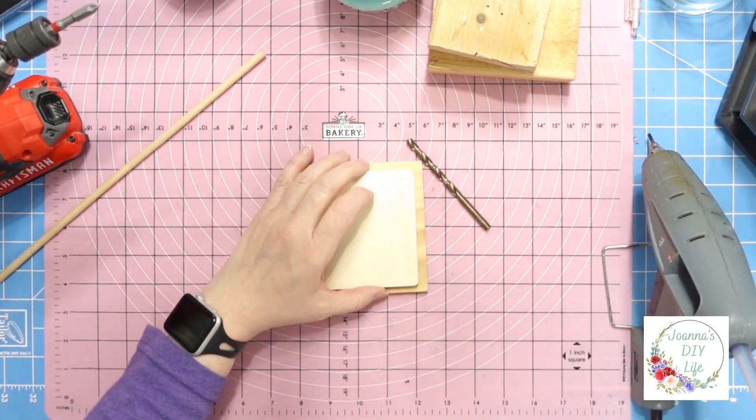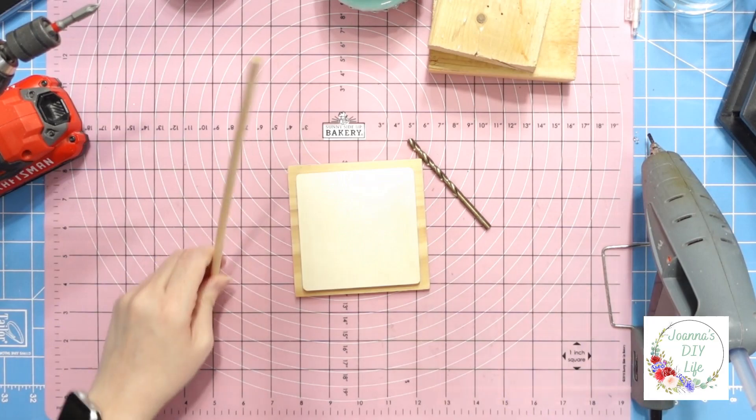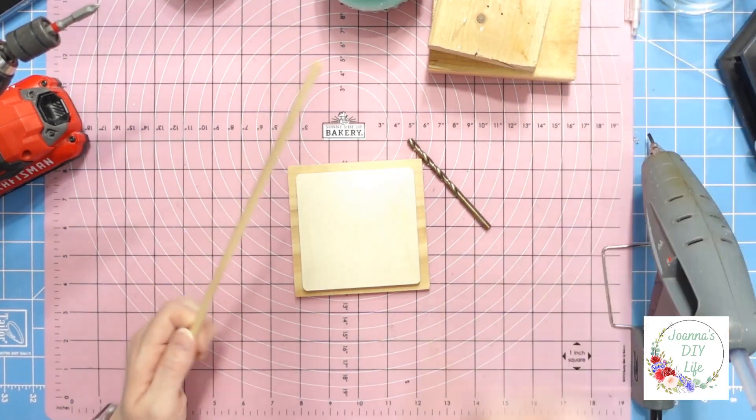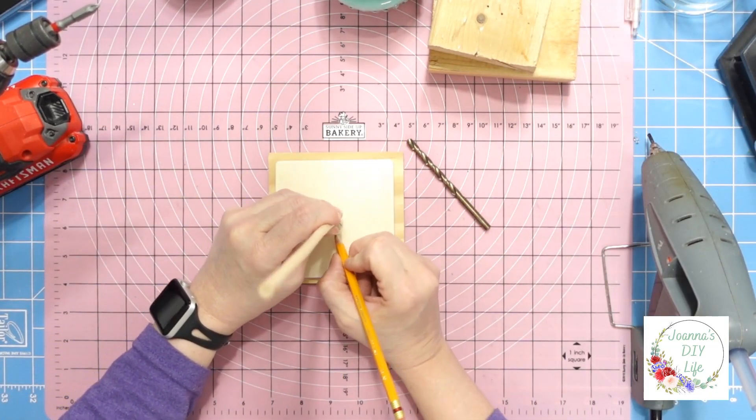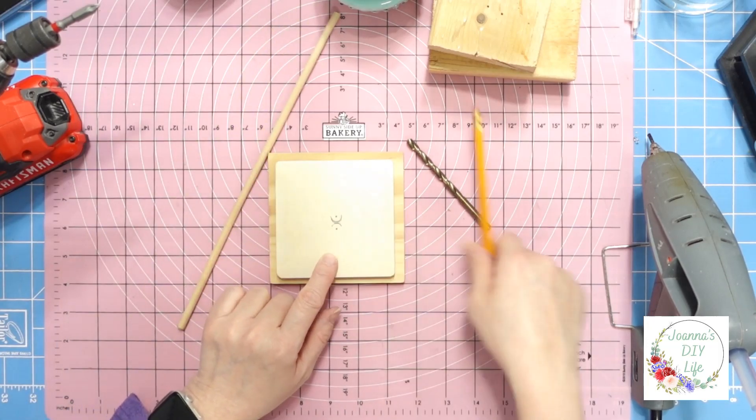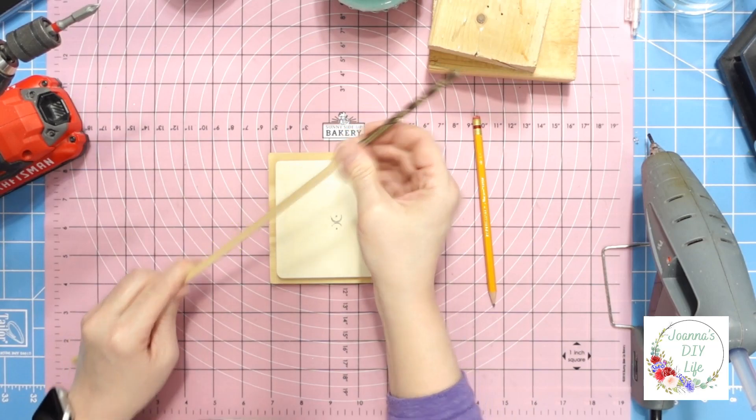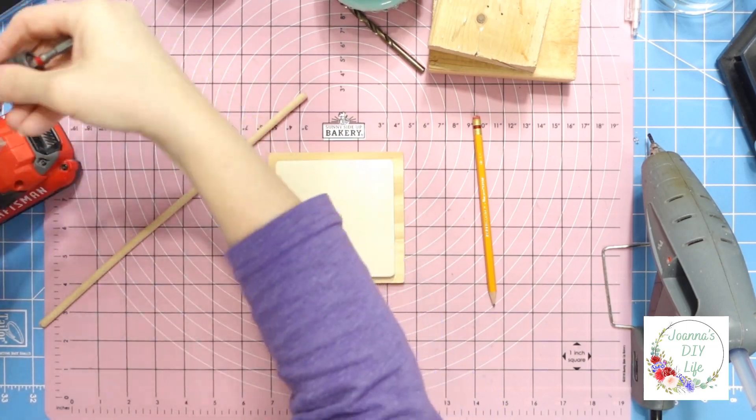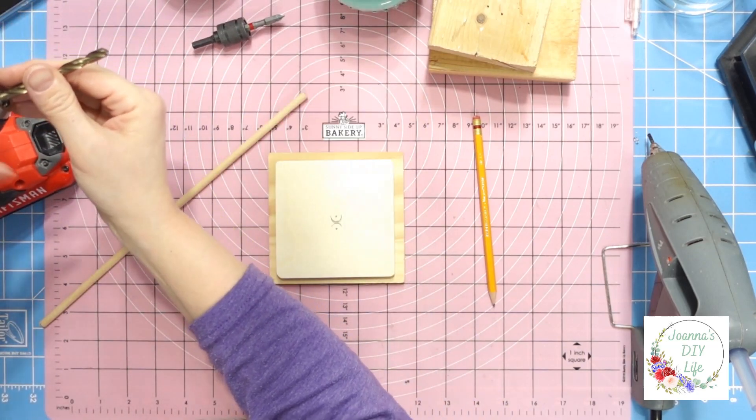Then I have a dowel rod and it doesn't matter if you use a dowel rod, skewer, whatever you got. Just put it in there and make sure that you have a drill bit that matches the size. I'm going to mark where I want my holes, and then I'm just going to put my drill bit in my drill here and drill my holes.